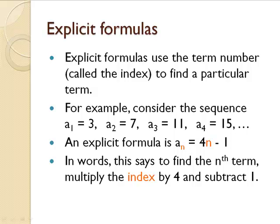So with this same sequence, 3, 7, 11, 15, an explicit formula for this would be A sub n is 4 times n minus 1. So A sub 3 is 4 times 3, which is 12, minus 1, to get 11.